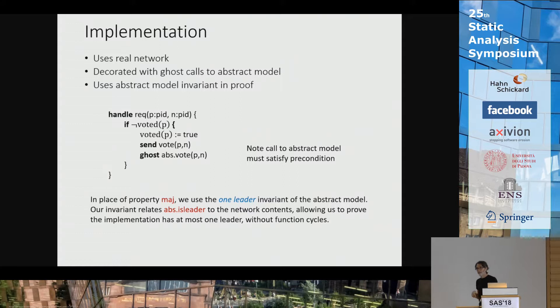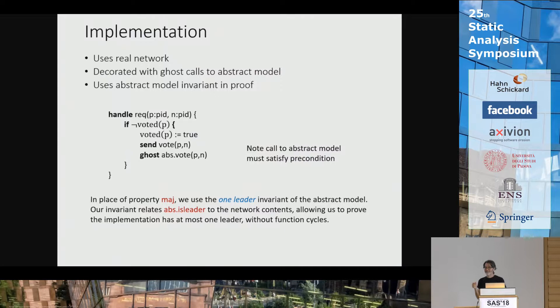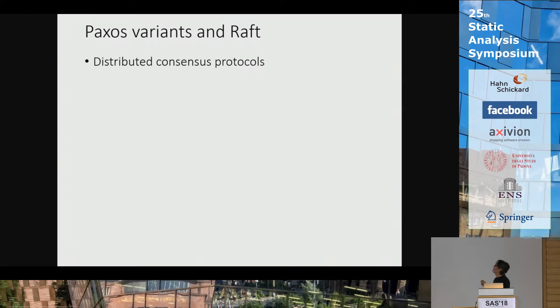I can now import that inductive invariant from the abstract model into my procedure, so instead of using the majority property — that every two majorities share an element — I use the one-leader invariant. Now I'm stratified, with no function cycles, and I can ask Z3 to reliably prove my inductive invariant. That invariant is a relation between the state of the real implementation and the state of the ghost abstract model. Note that sort process IDs is finite — arbitrary size but fixed and finite — so a majority can exist.